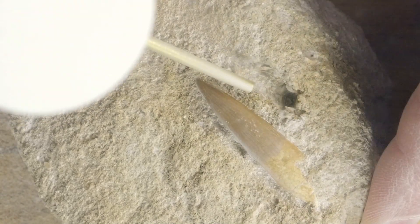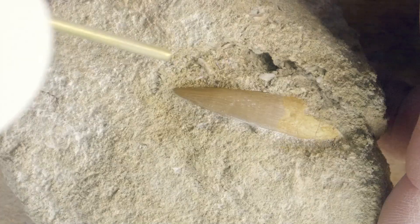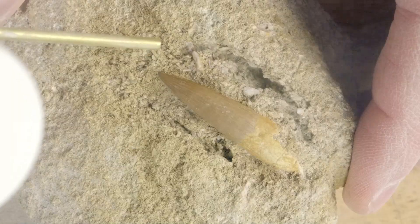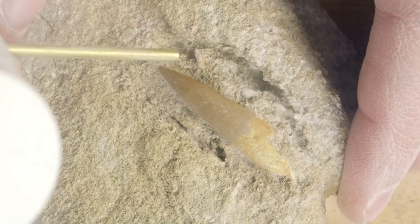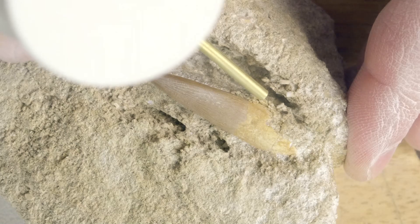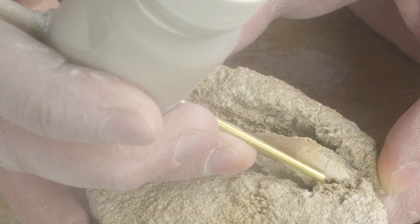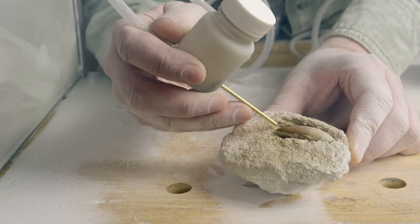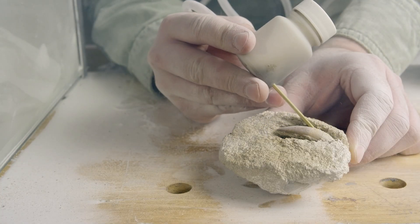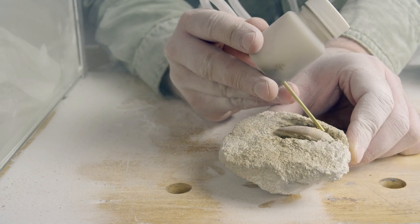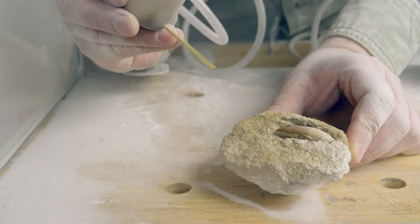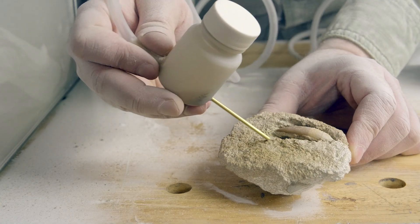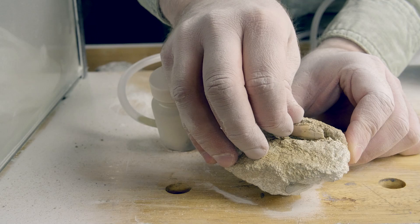The process of carving away the rock went pretty smoothly using baking soda. It wasn't nearly this easy on some of the other types of rock that I practiced on. Eventually I had the tooth only attached by a small pillar underneath, and I was able to snap it off.